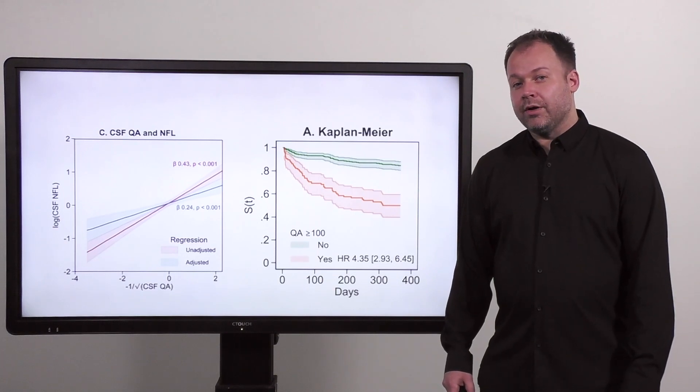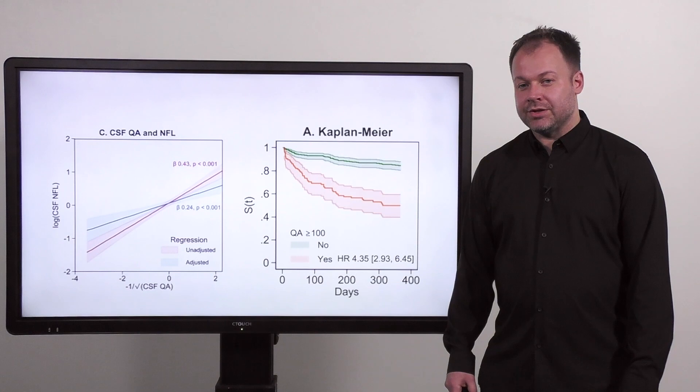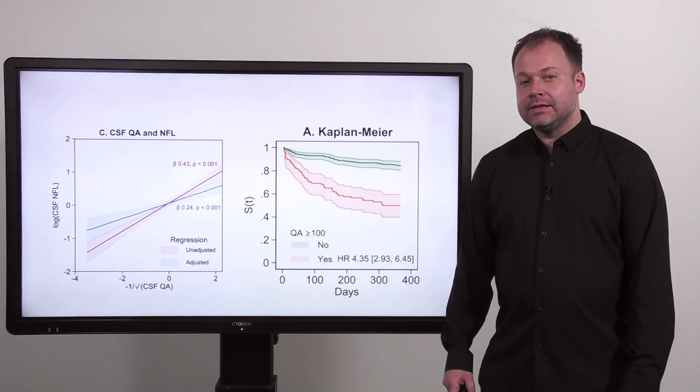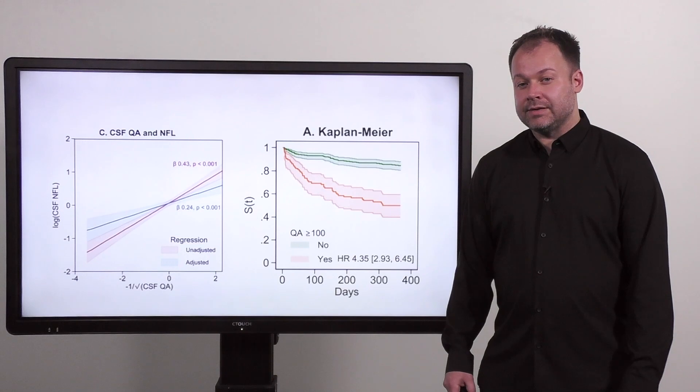Expanding somewhat on the neurotoxicity question, we also investigated whether there were patients with delirium who had CSF quinolinic acid concentrations that were as high as in studies on animals that have shown neurotoxicity. And those were 100 and 300 micromolar per liter. And indeed, this was present in a significant number of patients with delirium, but very few without.